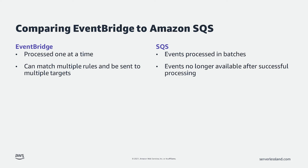However, with SQS, events are generally processed in a batch and are removed from the queue after the event is successfully processed. EventBridge events, on the other hand, are handled one at a time and can match multiple rules and be delivered to multiple targets in their lifetime on the bus.